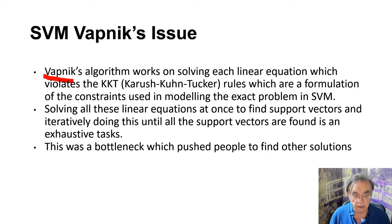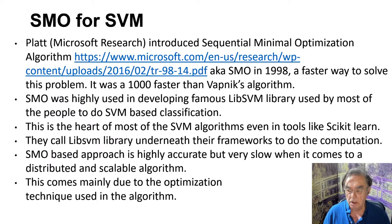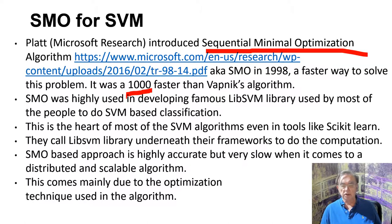Vapnik's algorithm had trouble satisfying the constraints, which were formulated as the Karush-Kuhn-Tucker rules, leading to extremely intense and wasted computations searching all possibilities. This pushed people to find other solutions, and one particularly great solution was called Sequential Minimal Optimization (SMO) from Microsoft Research in 1998. It is said to be a thousand times faster than Vapnik's method, and SMO was used in LibSVM, which is an industry standard for SVM and is used as the basis of many other SVM libraries. Scikit-learn, for example, uses LibSVM.